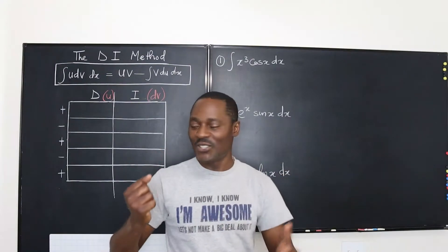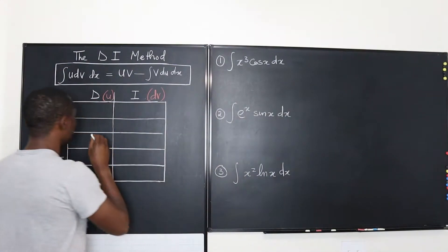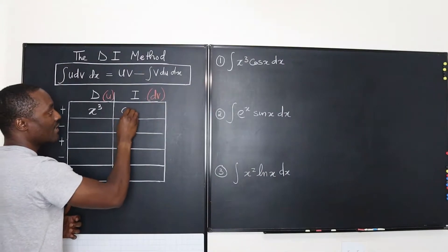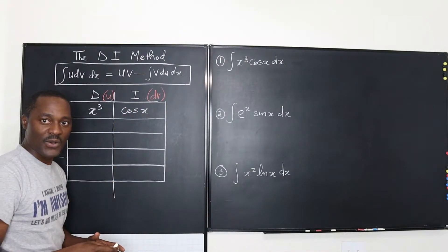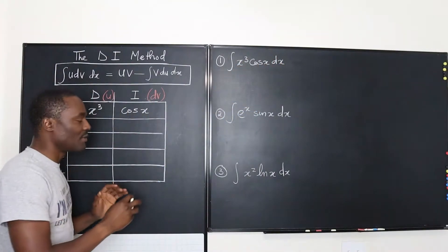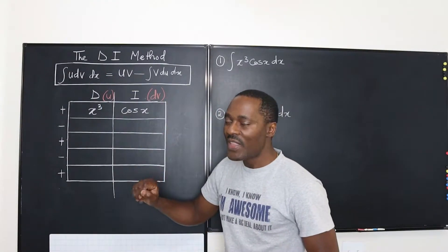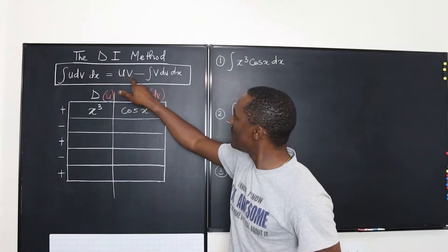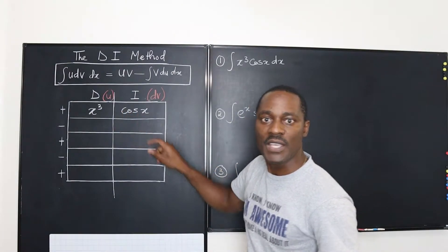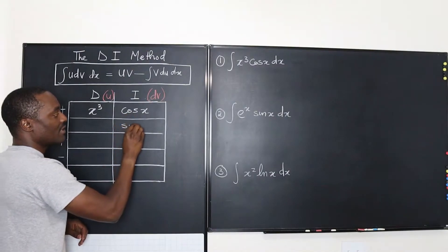Let's get into the video starting with the first example. I'll write X cubed, which is my U, and I'm going to take cosine X as my dV. I'm going to leave out the dx for now so we have enough space for whatever we're writing. Remember that the formula says it's going to be uv — we already have our U here, but this is dV. So let's get our V. Our V is going to be — if we integrate cosine X, we get sine X.